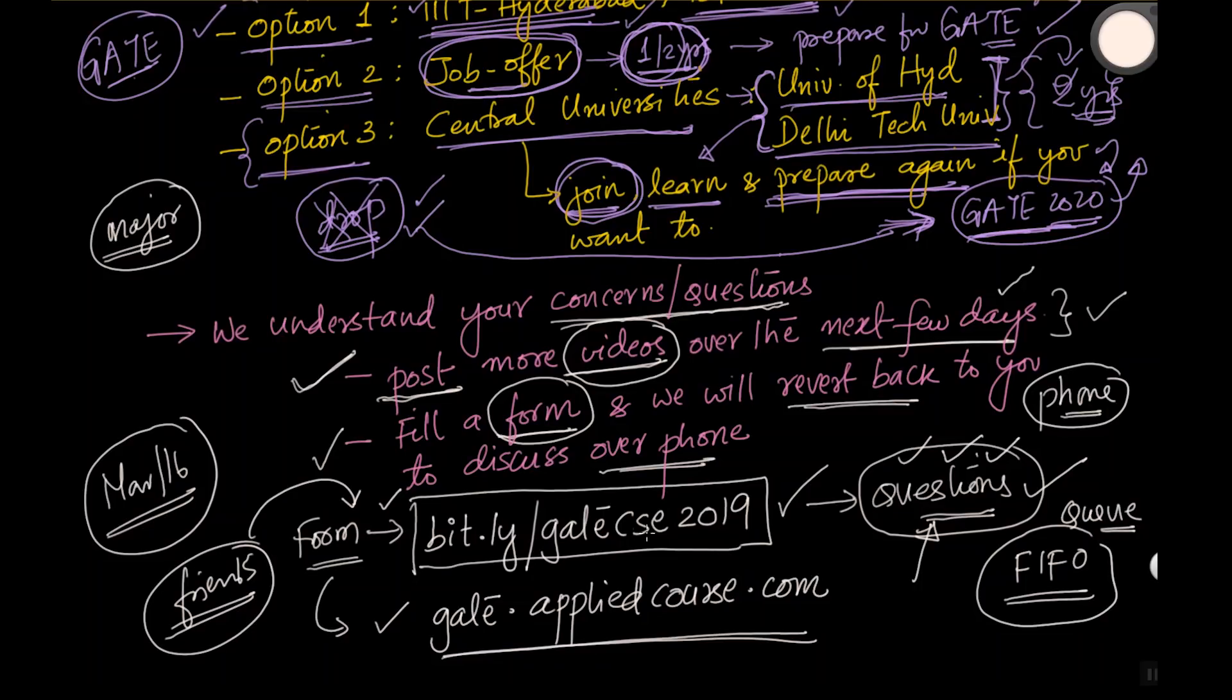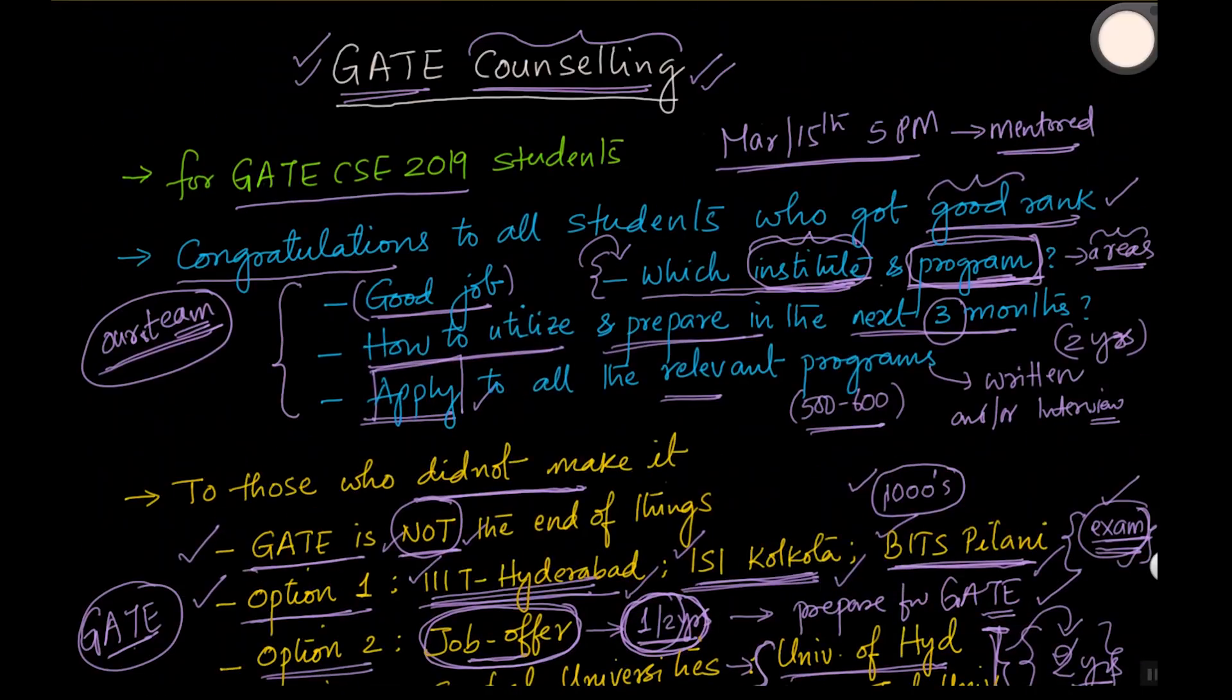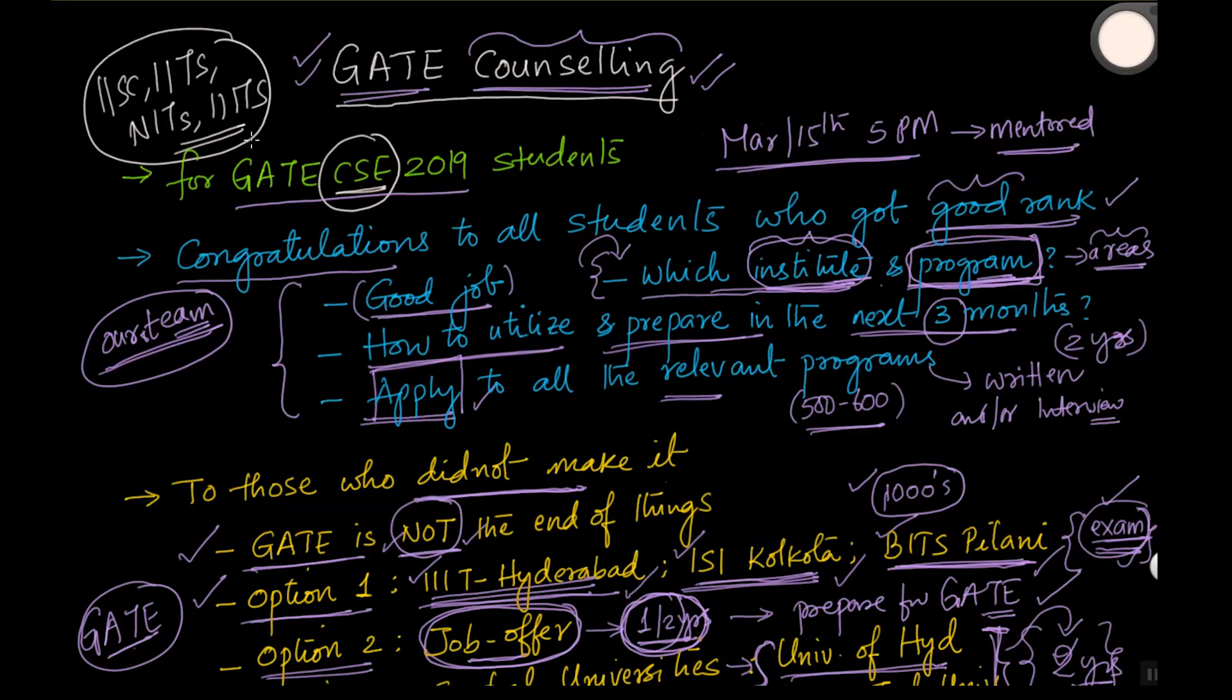Number two is, we will be only doing this for computer science students. We will not be able to do it for mechanical, electrical, electronics and other branches because currently at applied gate course, we don't have experts in those areas to be able to genuinely give good suggestions. So we limit this gate counseling exercise only for computer science students because we have a reasonably large team that can help you and many of our team members have actually studied at IISc, some major IITs, NITs, IIITs, etc.